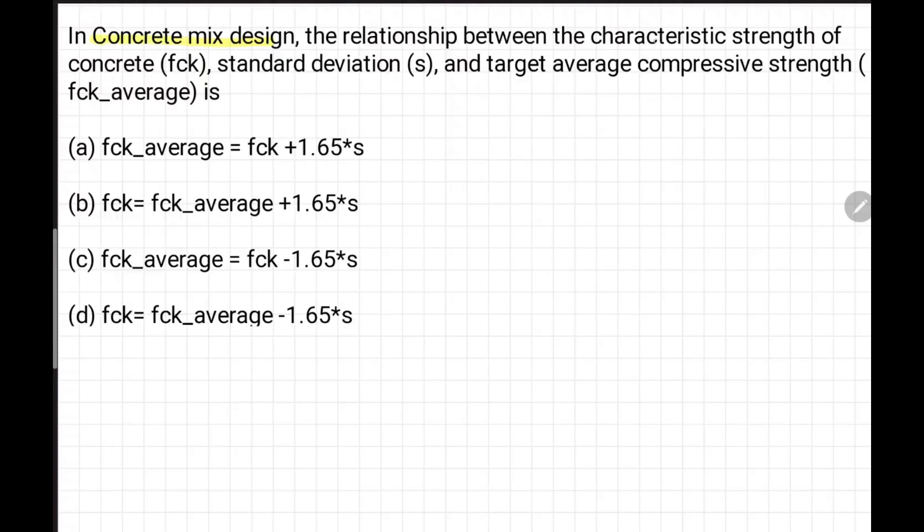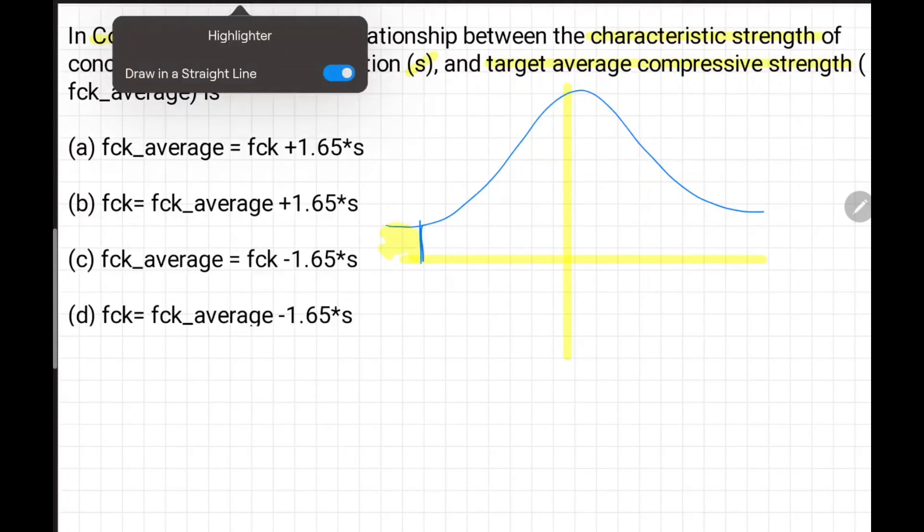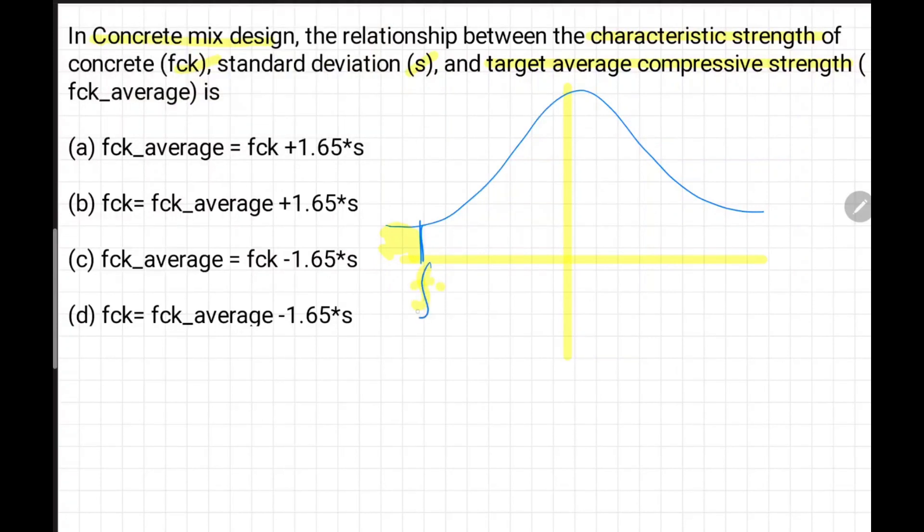In concrete mix design, relationship between characteristic strength fck and standard deviation and target average compressive strength. The concrete strength follows a bell curve - we learn in statistics that most random phenomena follow a bell curve. Concrete characteristic strength is one where only 5% of results fall below that value. This is the location of characteristic strength fck, and this is target strength, average compressive strength we are targeting. Based on statistics, this is 5%, and total bell curve is 100%. Half side is 5%, so this is 45% area of the bell curve.